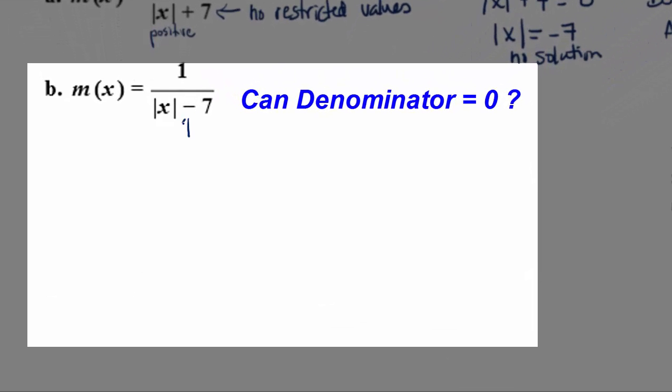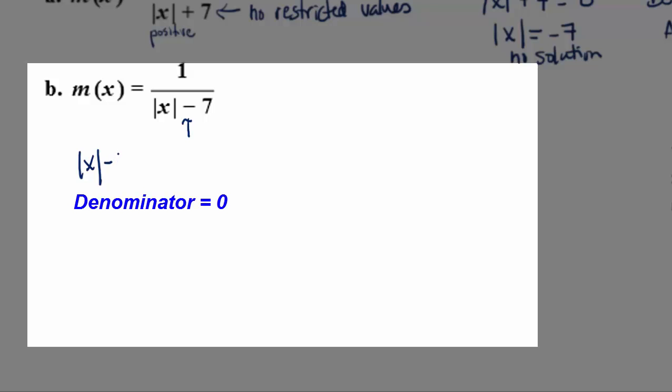Now in this case, we're subtracting. So when we subtract two positive numbers, it is possible to get zero. So let's go ahead and set up the equation that we solve when we want to find out if there are any restricted values for a rational expression. Absolute value of x minus 7 is the denominator. I'm going to set that equal to zero and solve for x.